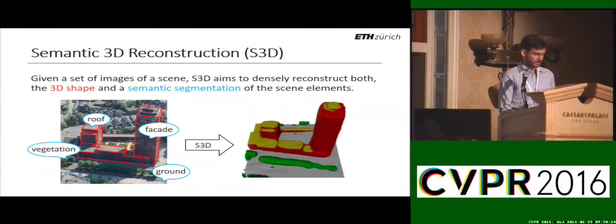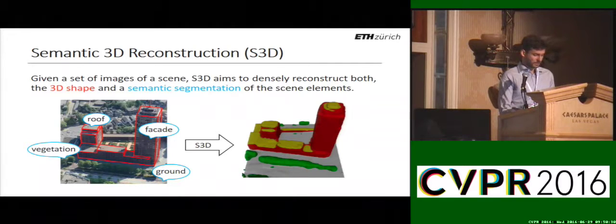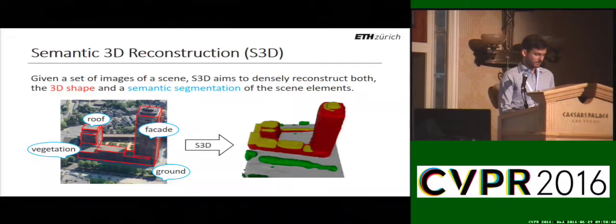As an example, consider the image on the left. We would like to reconstruct the geometry of the house, which is highlighted in red, and to assign to each object element a semantic category, which in this urban case could be ground, facade, roof, and vegetation. A possible result is shown on the right, where the semantics are reflected by the colors.